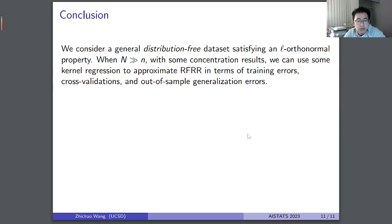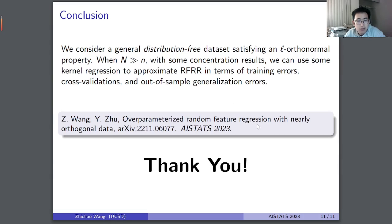In conclusion, we consider a general distribution-free dataset satisfying the new concept of the L-orthonormal property, and prove that in the over-parameterized regime we obtain concentration results. Using these, we approximate the random feature regression model by a corresponding polynomial kernel regression model, in terms of training errors, cross-validation errors, and out-of-sample generalization errors. For more details, please see our paper. Thank you.